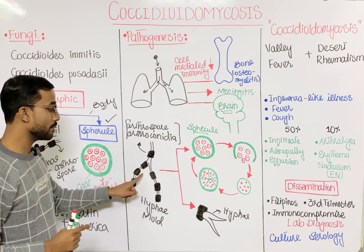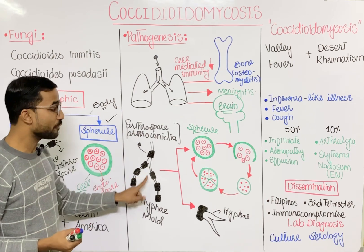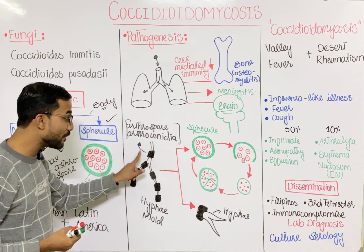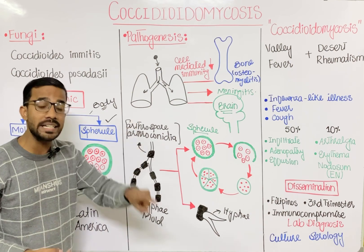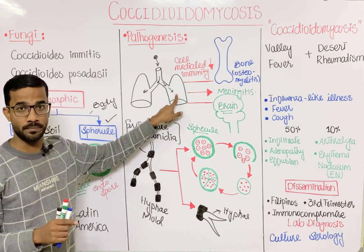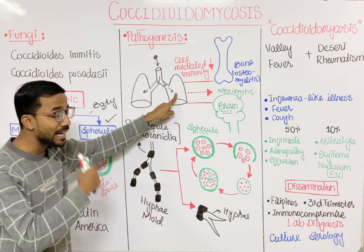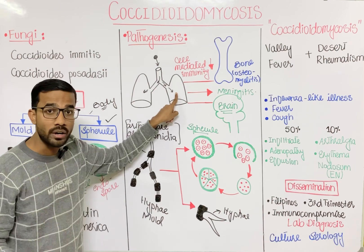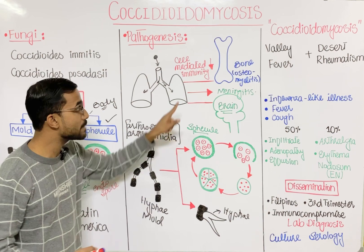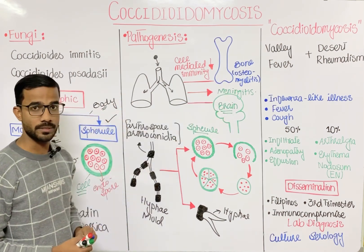To summarize the pathogenesis: arthrospores or arthroconidia, if remaining in the environment, form hyphae. But if they enter the body, they form spherules in the lungs. From the lungs, the infection can go to other organs when cell-mediated immunity is low, causing osteomyelitis and meningitis.